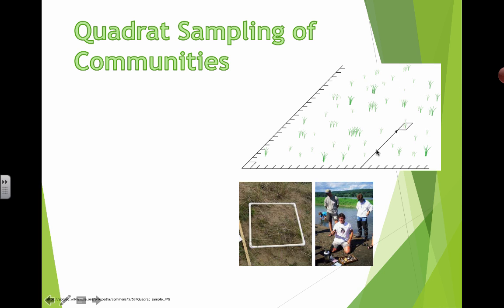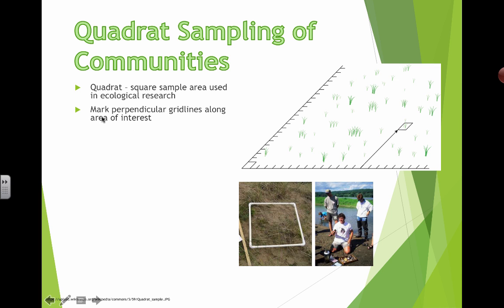You do it a few times and then you create a table and collect all your results. A quadrat is a square sample area used in ecological research. Here's what that quadrat could look like, and here's what it looks like placed out into an actual field. We have perpendicular grid lines marked along an area of interest. If you have a piece of string pre-marked with lengths to help you find your coordinates, you can do that as well.